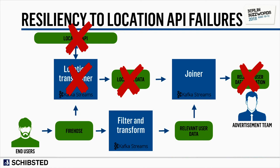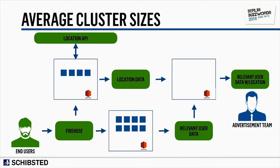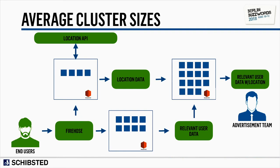Cost was another issue. The main filter-and-transform workhorse normally ran on about eight nodes. The location API component ran on three to five nodes. But the join application needed 15 nodes — sometimes 20 or 22. Keeping the join running was expensive. So we dropped the join entirely and used the location transformer to create the relevant-user-data-with-location topic directly. That was much more cost-efficient and had much lower latency.